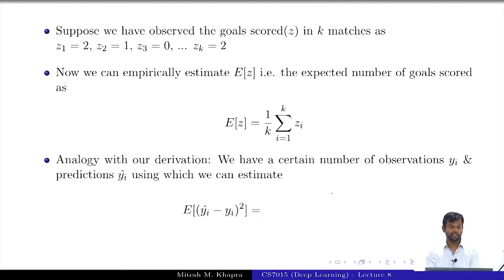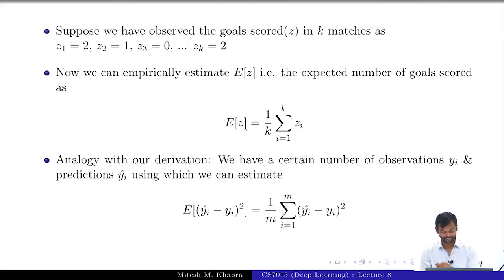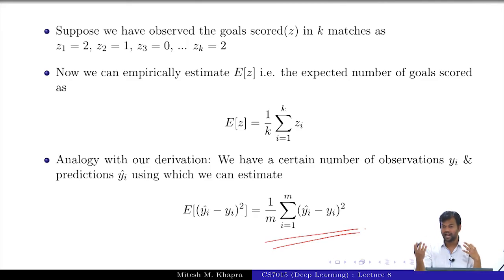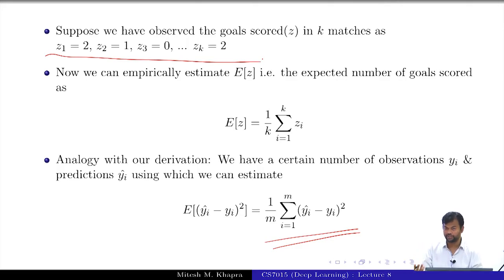Can you relate this football analogy to the quantity we are interested in? We are given m samples which are enough, and from that we make an empirical estimate. Just as seeing more matches gives a better understanding of goals scored, seeing more data gives a better estimate. We have done this a million times in this course already.